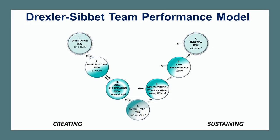The Drexler-Sibbet Team Performance Model provides a step-by-step framework for understanding team development. The model illustrates team development as seven steps: four to create the team and three to describe increasing levels of sustained performance. Each step represents a group of predictable issues that a team must recognize and master to become a high-performing team.